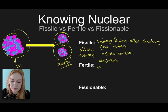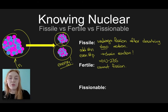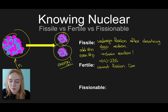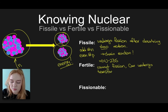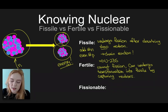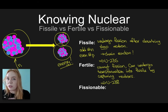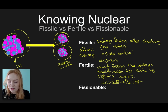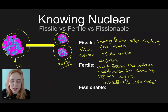Next we have fertile materials. Fertile materials cannot undergo fission; however, they are able to transform into fissile materials by absorbing neutrons. A good example of this is uranium-238, which cannot undergo fission but can absorb neutrons, turning it into plutonium-239, which can undergo fission. So plutonium-239 is fissile.